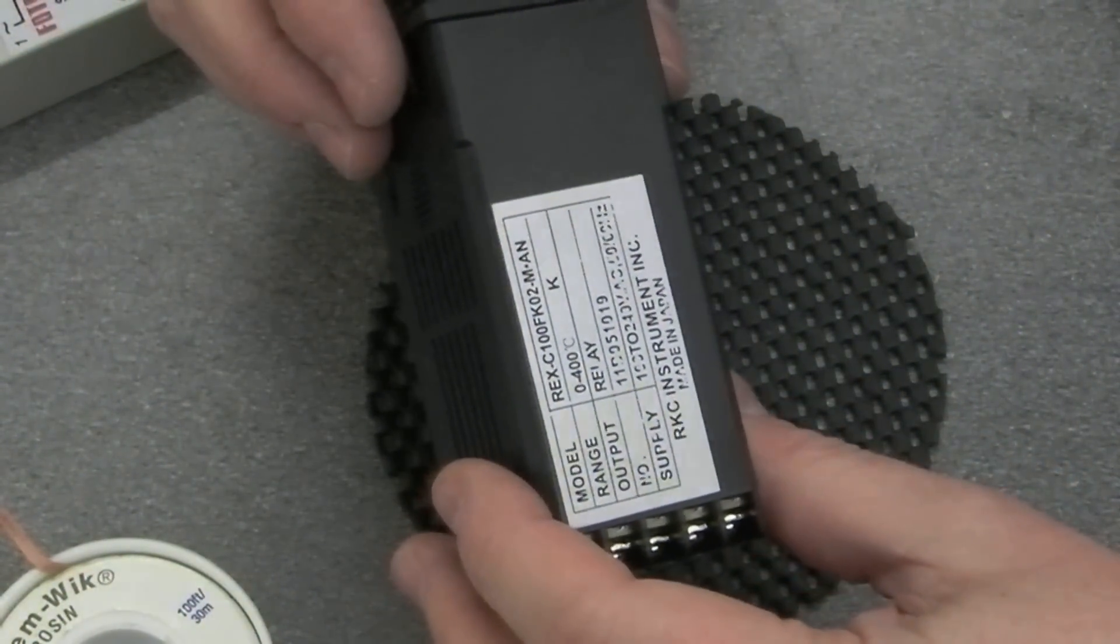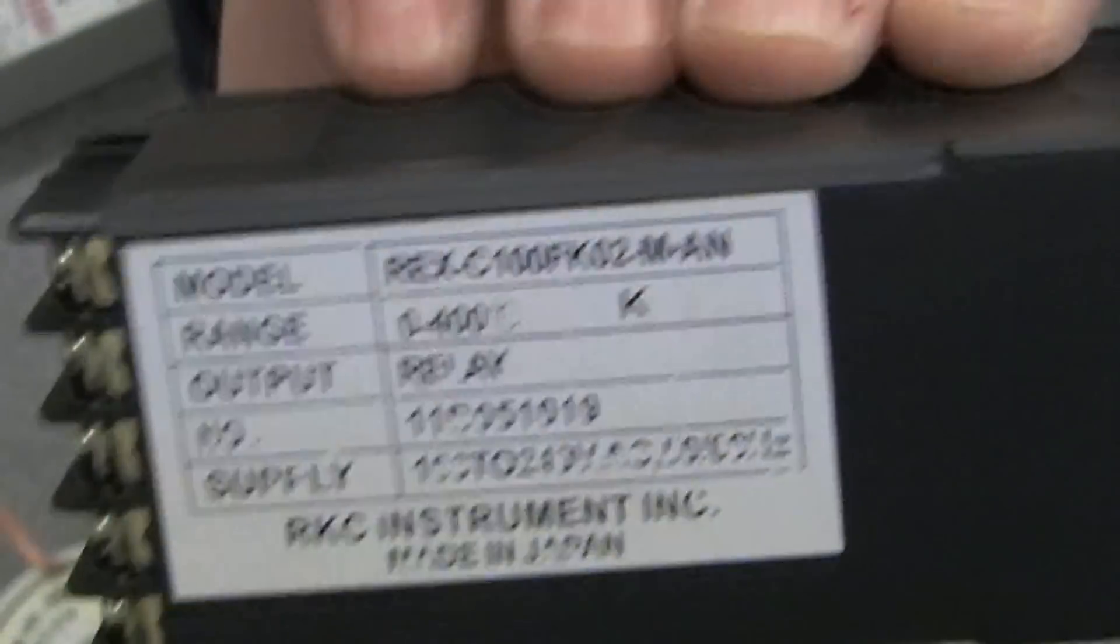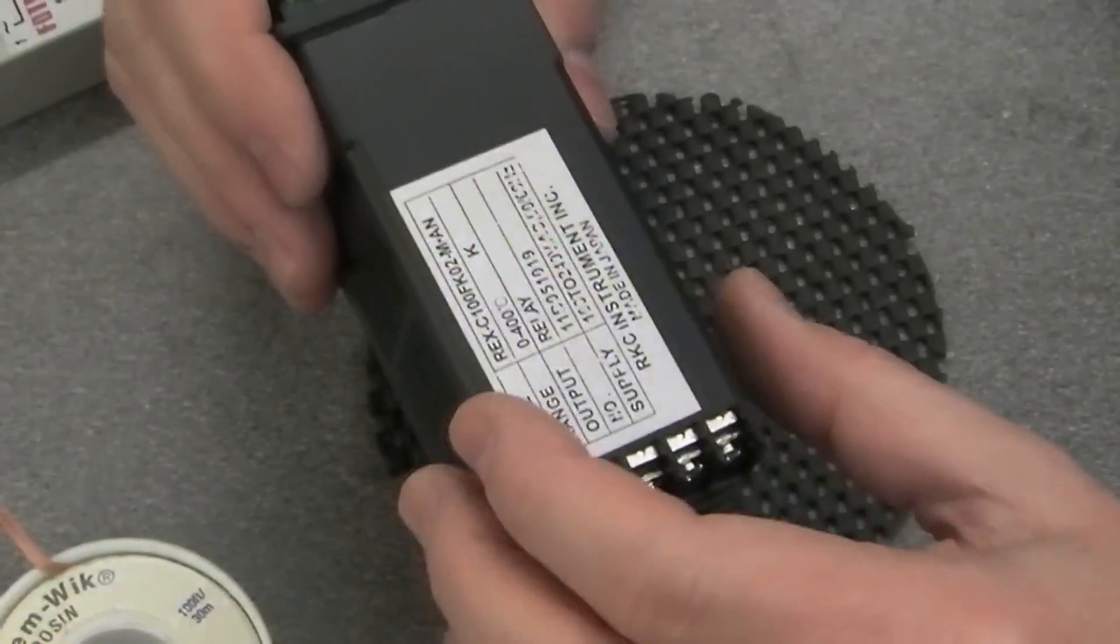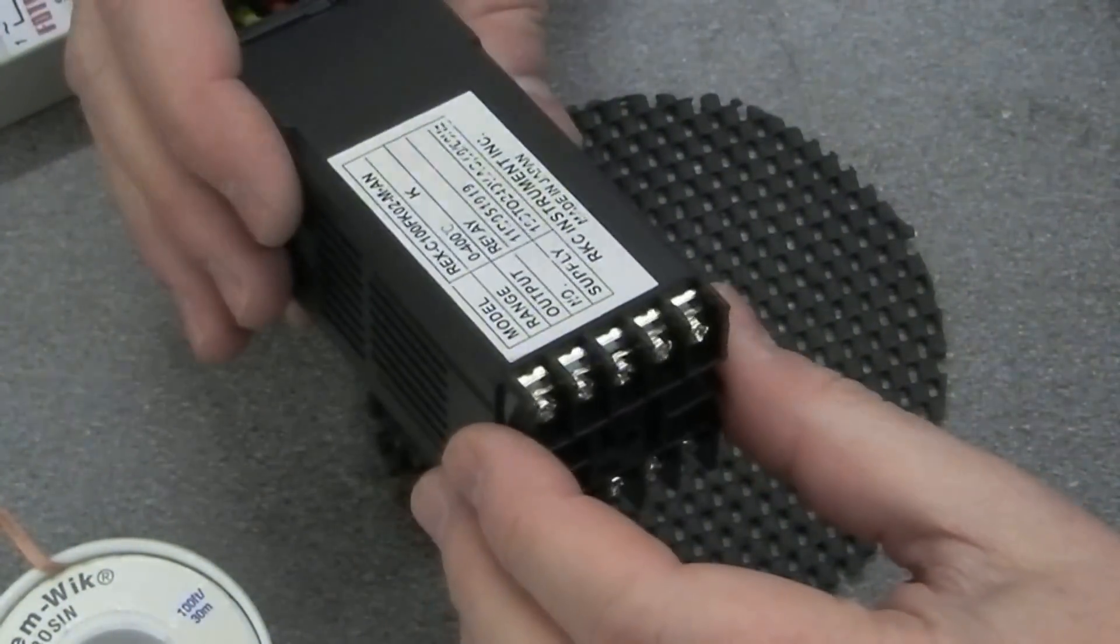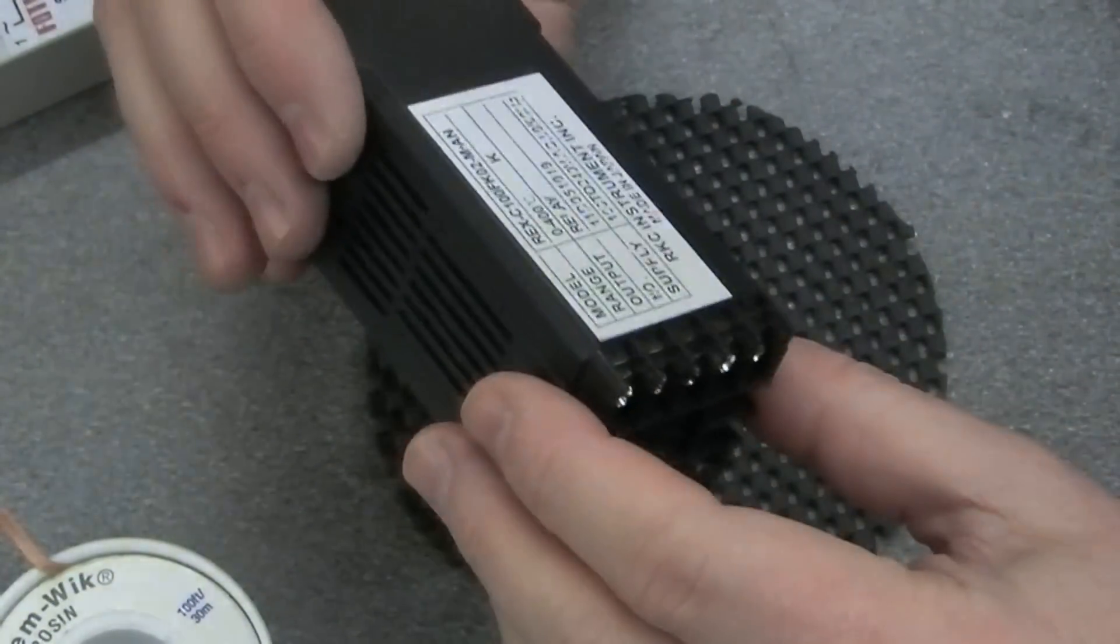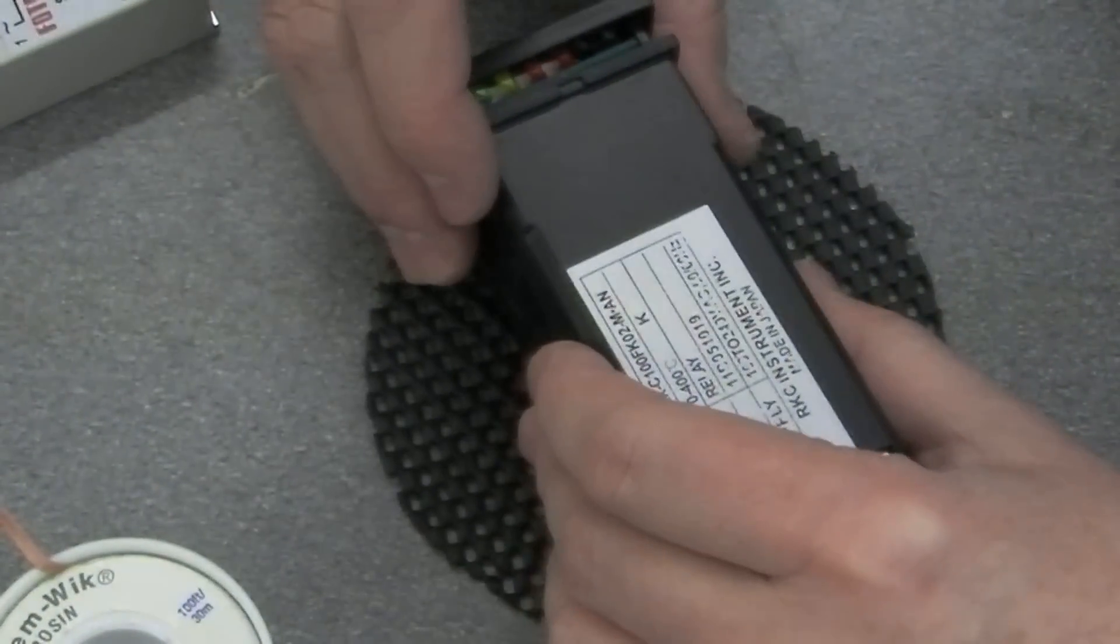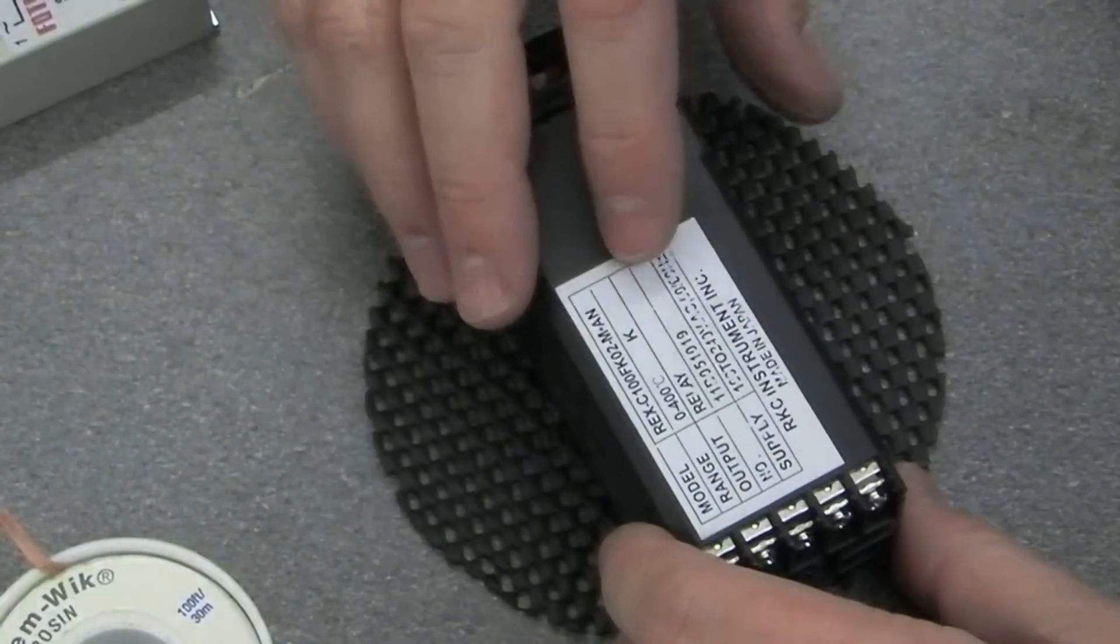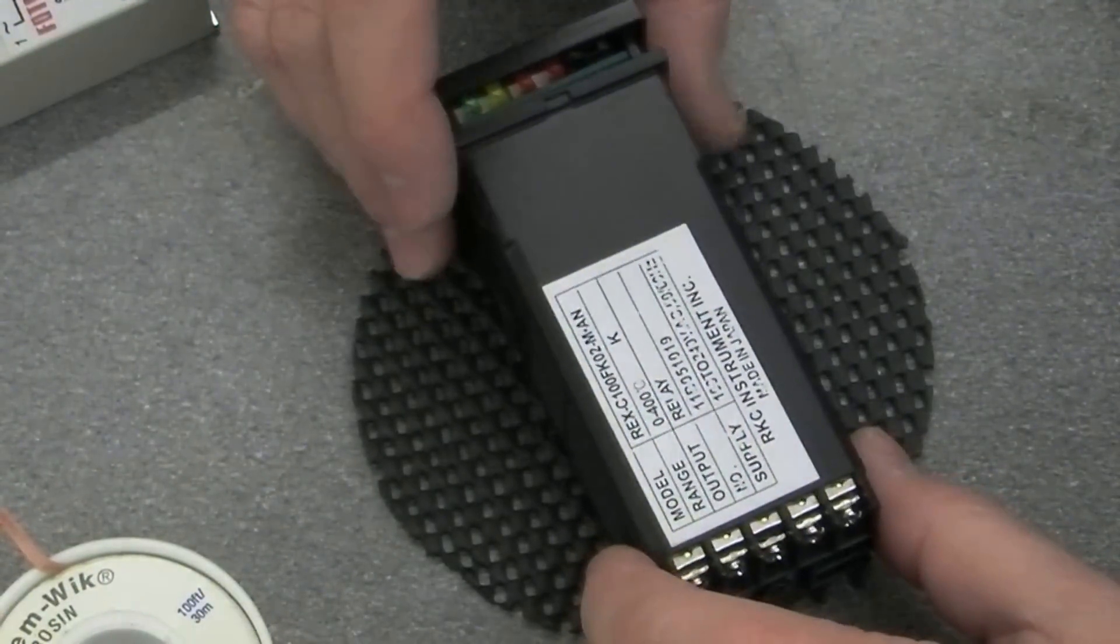This is the Rex C100 FK02MAN and if you've been watching the other videos you'll know that this one has a relay controlling the output and it switches the mains live supply to the output pins. That is not really what we wanted it to do because it can only handle 3 amps and I'll show you another reason why I don't want it switching any great loads in a moment.